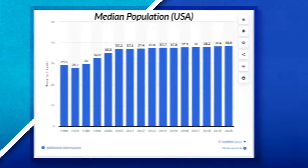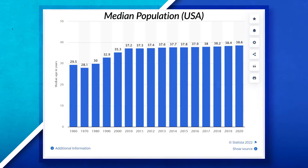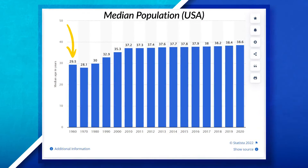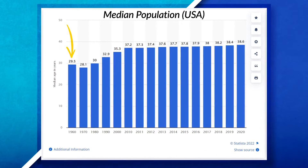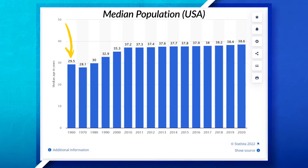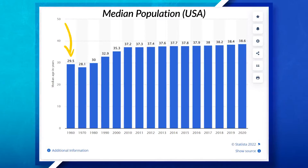In 1960, the median age of the United States was 29.5 years old. However, over the years, we've continued to see this number increase. The United States is getting older, and with that comes new challenges.